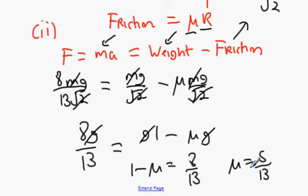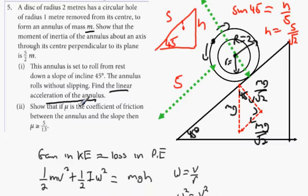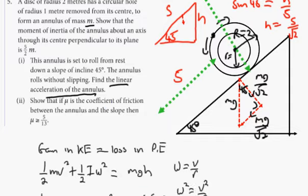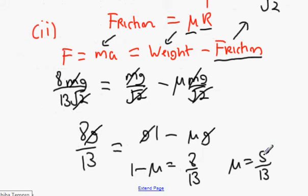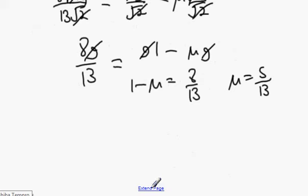When the annulus is on the point of slipping, your friction force equals the maximum friction value. The question says to show that mu is greater than or equal to 5/13. We've proven mu equals 5/13 — that's the minimum value of mu that will prevent slipping.